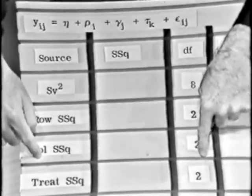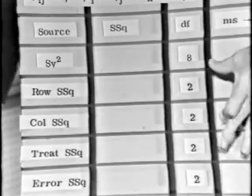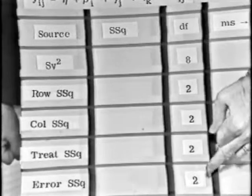two degrees of freedom for columns, and two degrees of freedom for treatments, because there are three treatments and three columns. And so how many degrees of freedom would that leave over in the error sum of squares? And that would leave two degrees of freedom over in the error sum of squares.